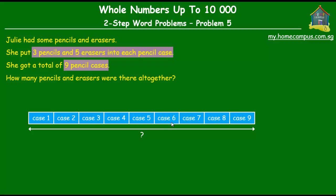And what we also know is that each pencil case had three pencils and five erasers. So each pencil case had three plus five, that is eight items.